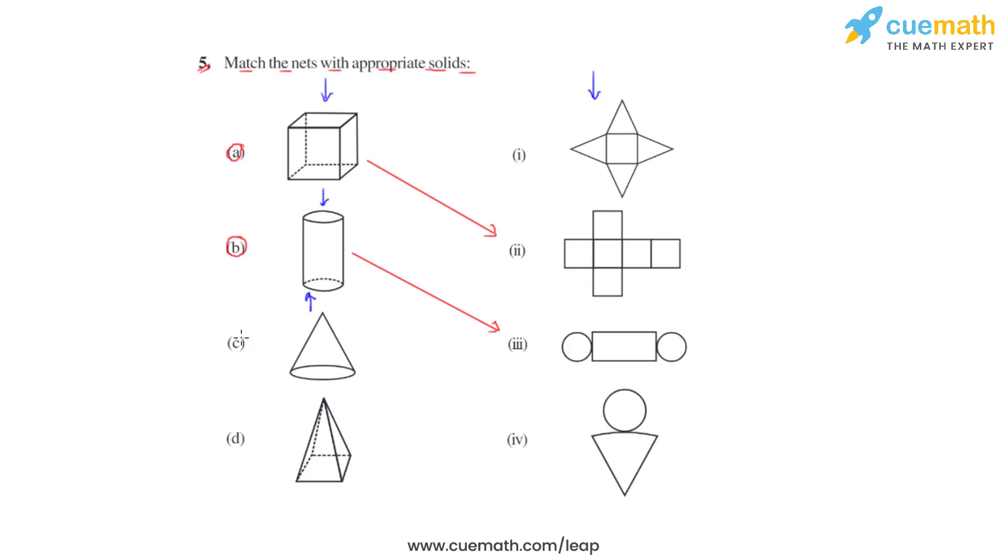Moving on to the third part which is a cone which consists of a circle at its base which is here. Based on this observation, the remaining two options that is the fourth and the first option, we see that there is a circle only in the fourth option. We can say that for this solid, this fourth option is the appropriate net.